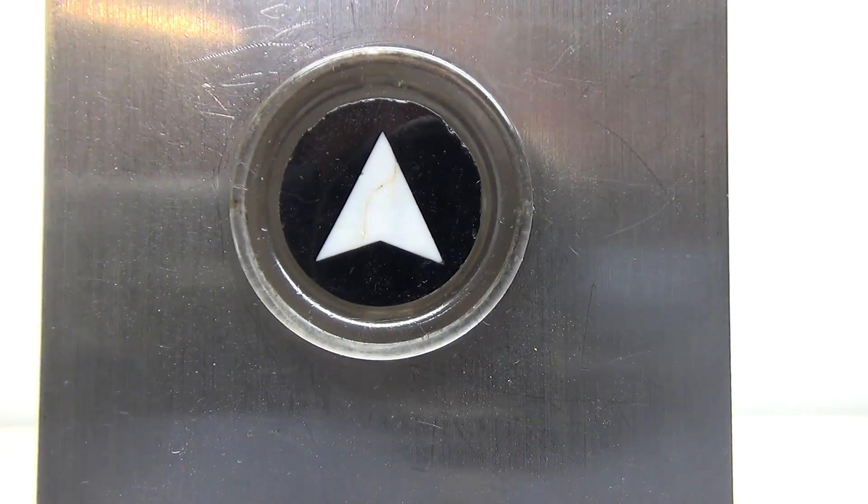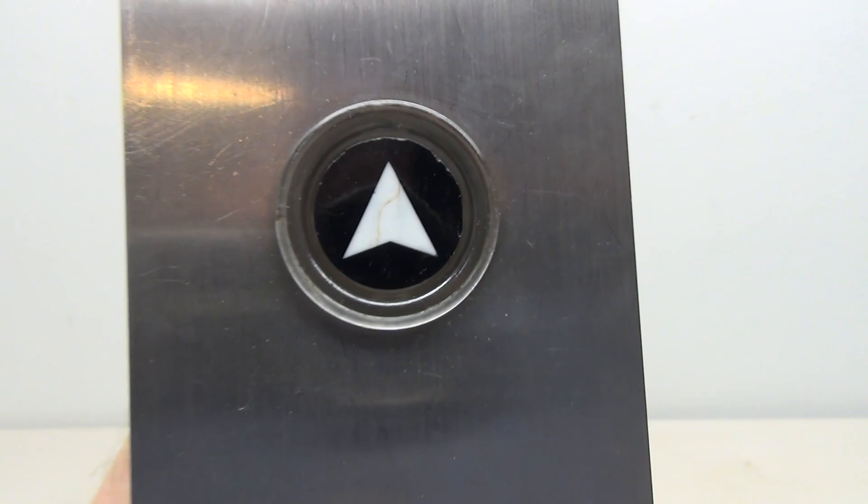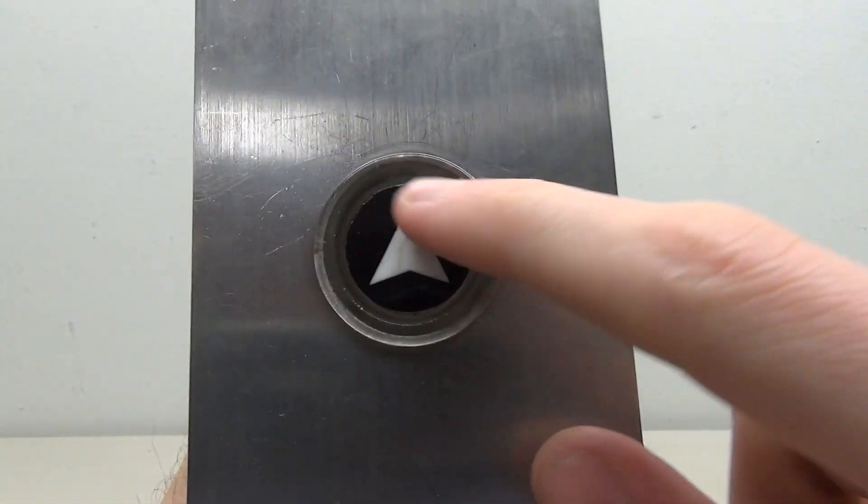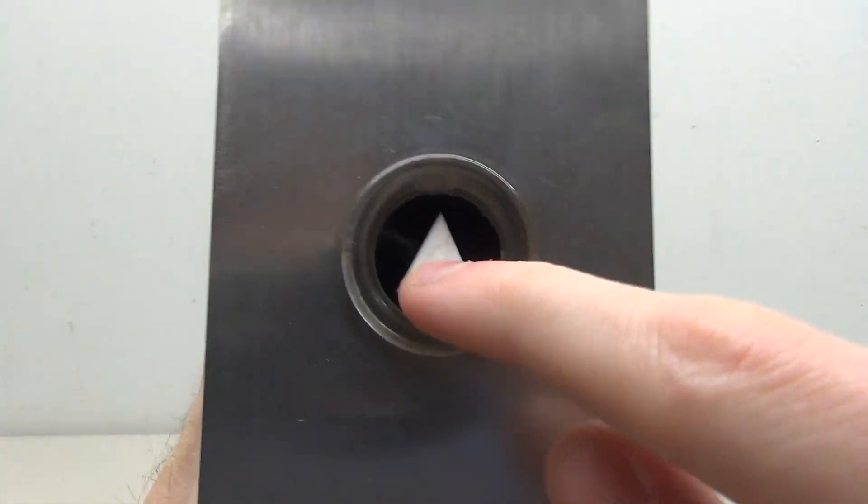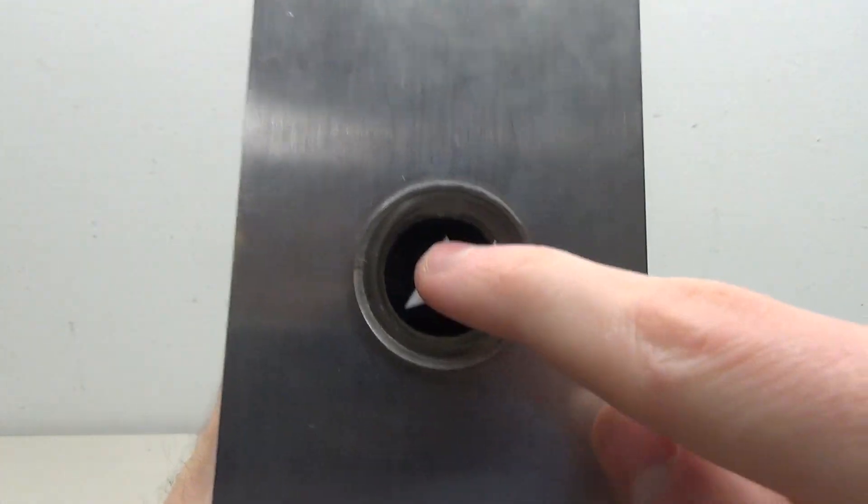If you've ever seen an older Otis elevator, you've probably seen this button before. It's a very simple button, just a black button with a little white arrow in the middle and a clear ring around the side.